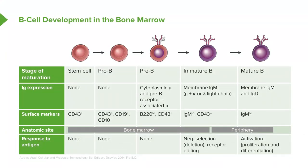Once B cells are mature, they are fully able to respond to antigen. They can become activated, they can proliferate and differentiate, particularly becoming specialized to produce a progeny called a plasma cell. Plasma cells secrete very large amounts of antibody of the same specificity as the B cell receptor on the surface of the B cell.